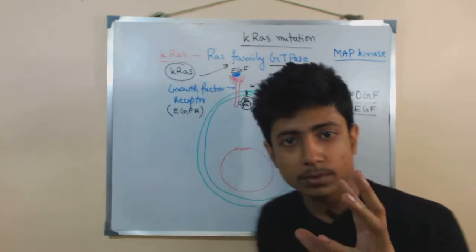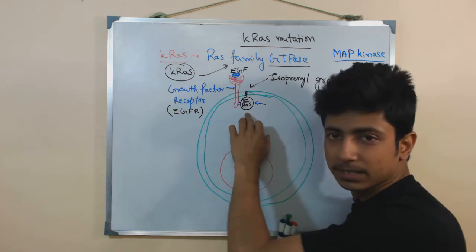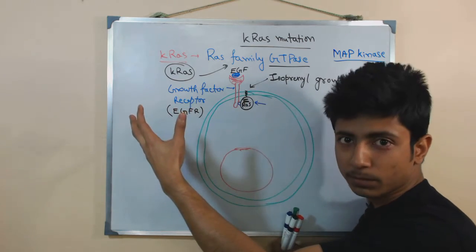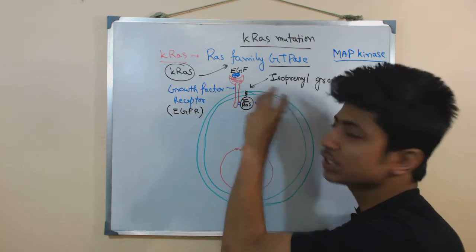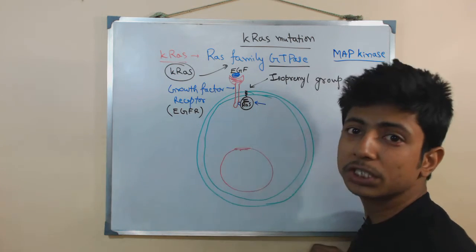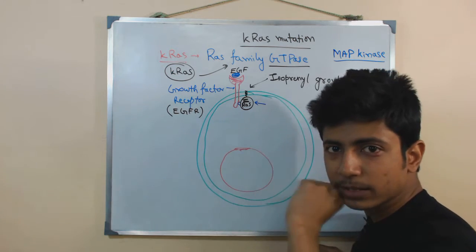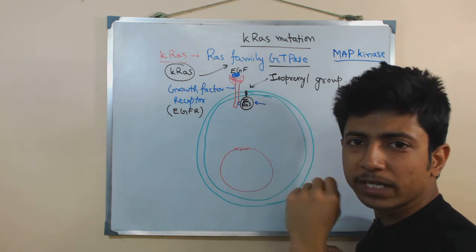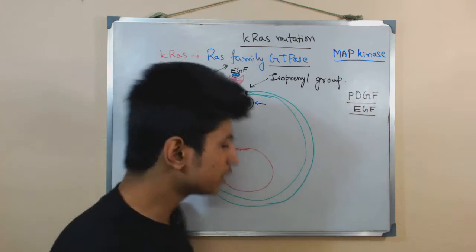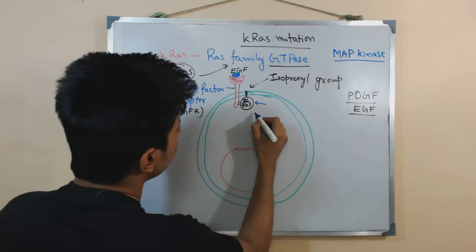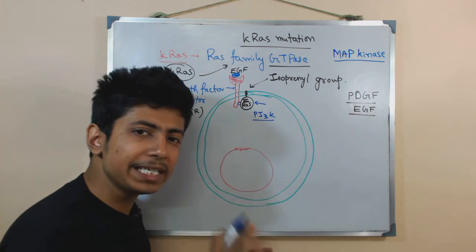The molecule that receives the signal from outside and delivers it inside the cell is RAS. There are different types of RAS molecules — KRAS, NRAS, and so on. The KRAS molecule will come, attach, and as a GTPase it will break down GTP into GDP upon activation. By doing so it transfers a phosphate group to proteins inside. This activated RAS will majorly activate different types of proteins, one of which is PI3 kinase.